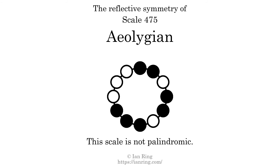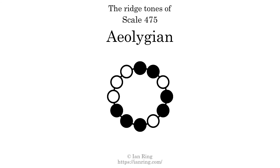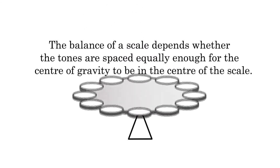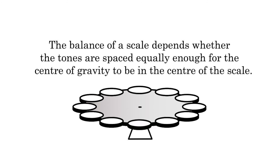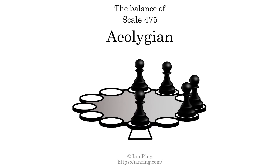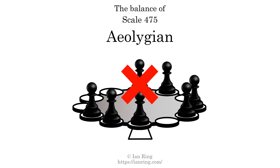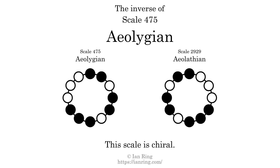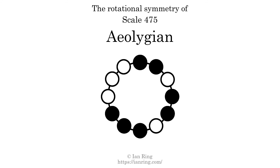This scale has no reflective symmetry. This scale has a different pattern of intervals ascending and descending, so it is not palindromic. This scale has no ridgetones. This scale is not balanced. The inverse of this scale is scale 2929, also known as Eolatheon. This scale is chiral — it cannot transform into its inverse by rotational transformation. This scale has no rotational symmetry.